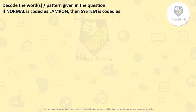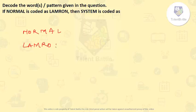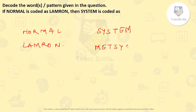Decode the words or pattern given in the question. If 'normal' is coded as 'lamron', then how is 'system' coded? Observing the pattern, you can see they have just reversed the letters of 'normal' to get 'lamron'. So coding 'system' the same way gives us 'metsys'. The answer is metsys.